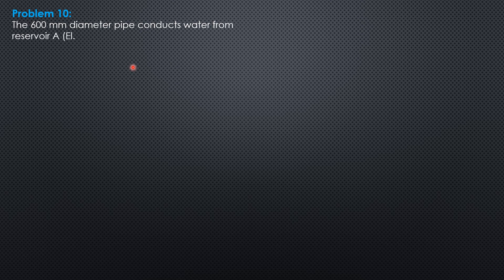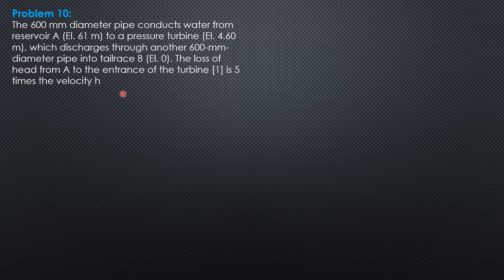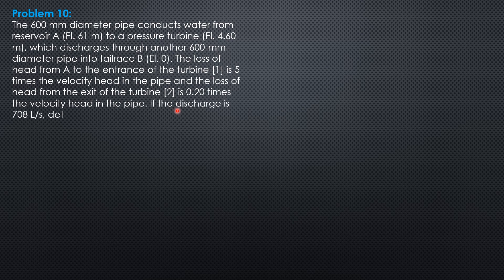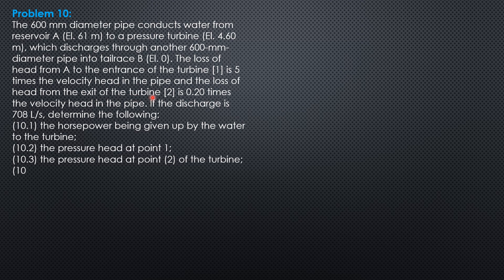A 600 mm diameter pipe conducts water from reservoir A at elevation 61 meters to a pressure turbine at elevation 4.6 meters, which discharges through another 600 mm diameter pipe into tail race B at elevation 0. The loss of head from A to the entrance of the turbine, marked 0.1, is 5 times the velocity head in the pipe. The loss of head from the exit of the turbine, marked 0.2, is 0.2 times the velocity head in the pipe.